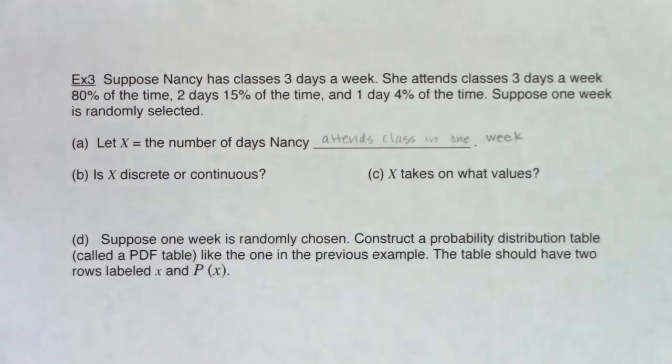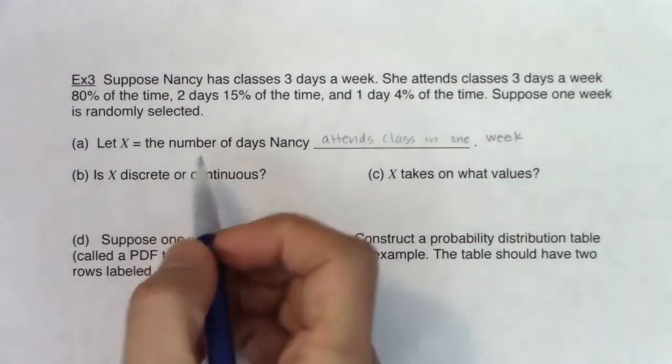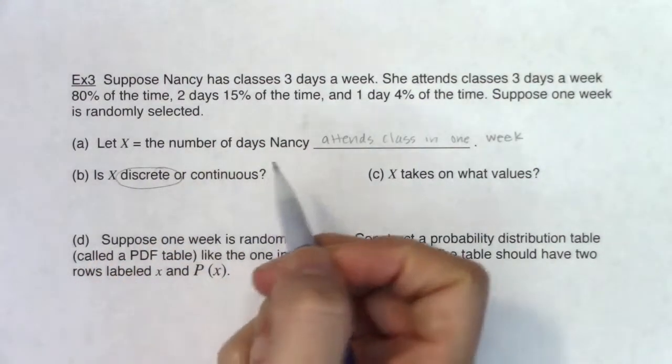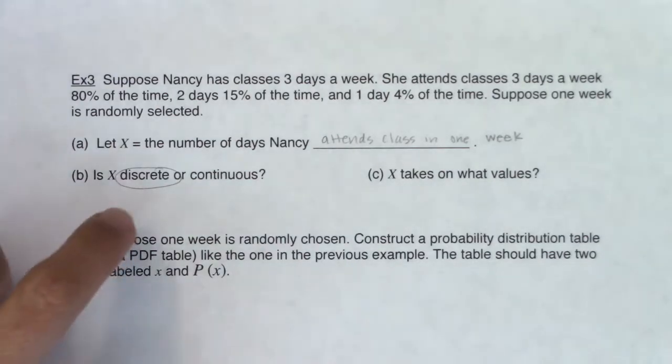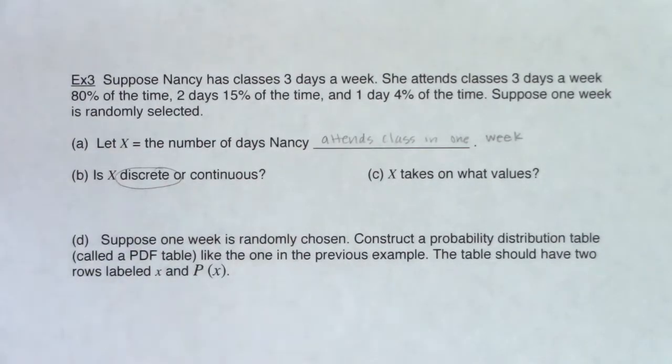Is X discrete or continuous? Well, I'm not going to measure the number of days that Nancy attends class. I'm definitely going to count it, so it's discrete. And I said there's a quick little thing for chapter four. You always know it's discrete in chapter four. But once we get moving on past chapters five and six, it's good to be able to identify is it discrete or continuous, because you'll have to decide at that point.